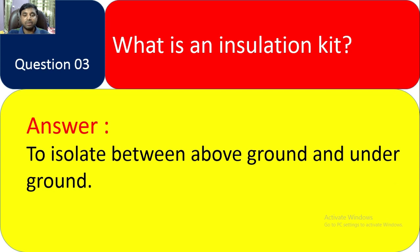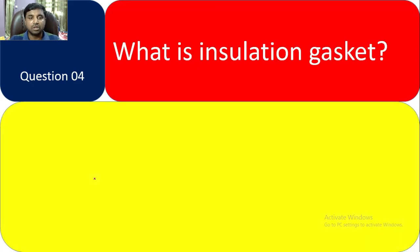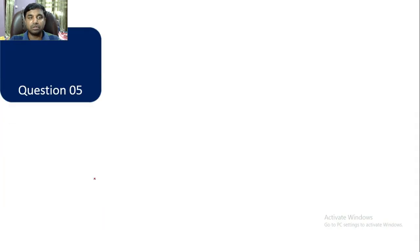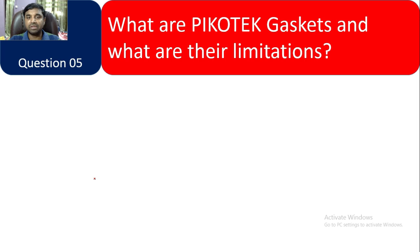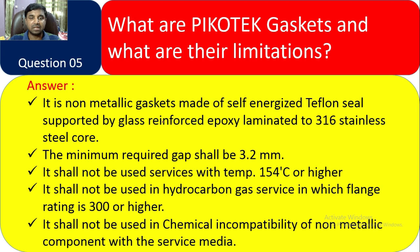Answer for Question 3: The installation kit is used to isolate between above-ground and underground — insulation is required in the pipeline and piping for this purpose. Question 4: What is an insulation gasket? Answer: It is used for isolation of dissimilar metal flange joints, and for cathodic protection — that is called the picotech gasket.